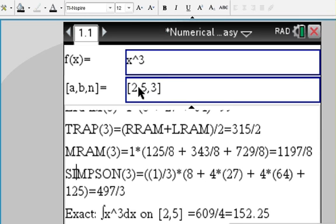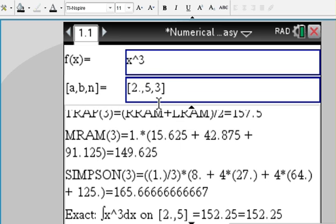If you want decimals, which is pretty much desired, just make one of the inputs a decimal, such as the a value. You can see that all the answers are automatically the decimal solutions. Down here we also show what the exact value would be for this interval definite integral.